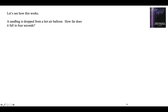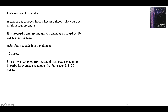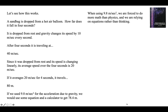A sandbag is dropped from a hot air balloon. How far does it fall in 4 seconds? Dropped from rest, gravity changes its speed by 10 meters per second every second. After 4 seconds it's traveling at 40 meters per second. It goes from 0 to 40 meters per second smoothly, so its average speed over the 4 seconds is 20 meters per second. If it goes 20 meters each second for 4 seconds, it travels 80 meters. If we used 9.8 m/s² we would get 78.4 meters — close enough to 80 for me.